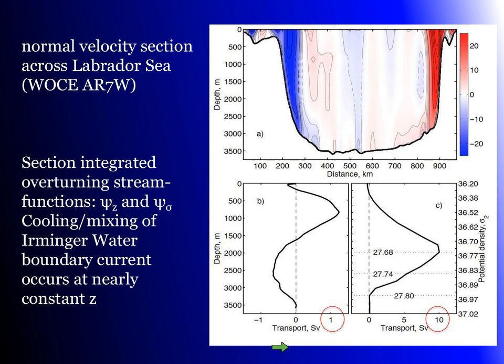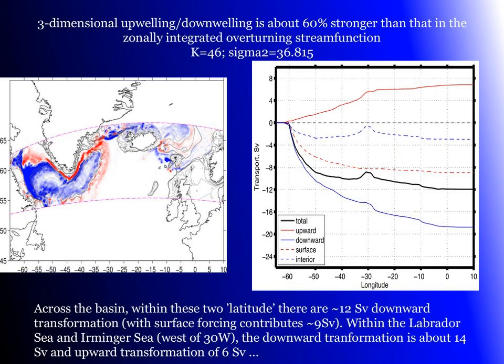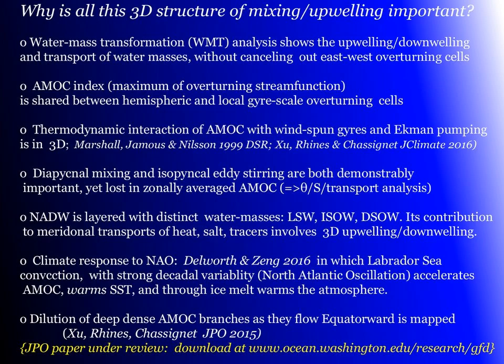To conclude — this ties in with meridional heat transport and salt freshwater transports, tracer transports, because the east-west structure is there and it works with the lateral wind-driven eddies. The thermodynamic interaction of AMOC with the wind-spun gyres and Ekman pumping requires this to be understood in three dimensions. A precursor to everything I've said today is Marshall, Jamous, and Nielsen 1999 — a beautiful paper addressing this very same problem with earlier and less-resolved models — and also a paper we wrote in J-Climate in 2016. There are many reasons why we think this 3D structure is important.